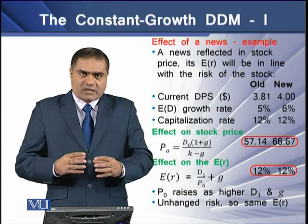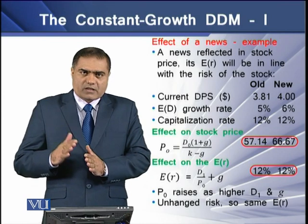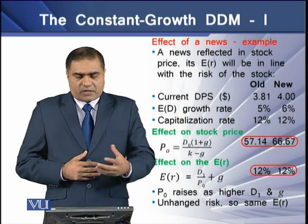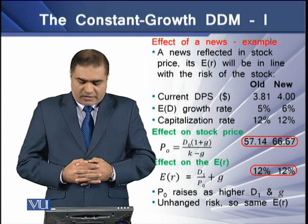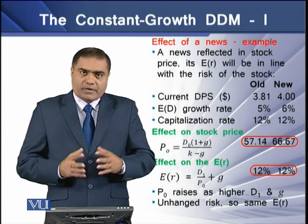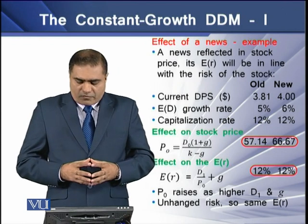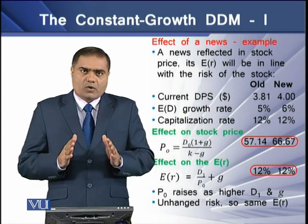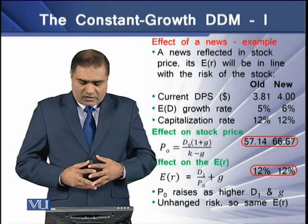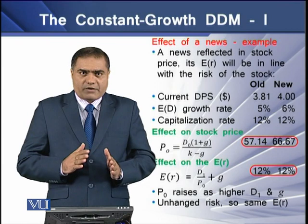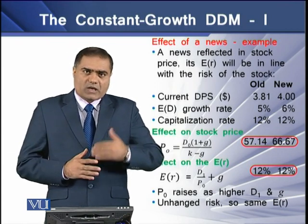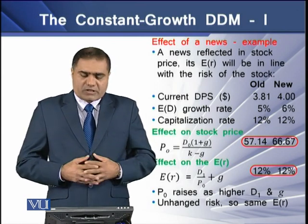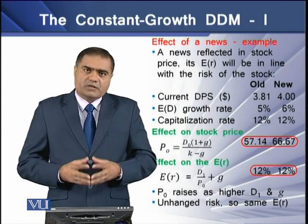This news has increased the intrinsic value of the stock. For the expected rate of return, using the formula D1 over P0 plus capital gain yield, the value is 12% for both scenarios. We see that V0 rises as D1 and G grow higher, and since there is no change in risk, there is no change in the expected rate of return.